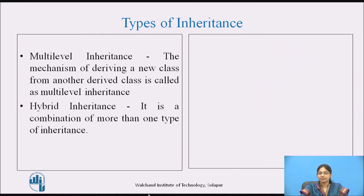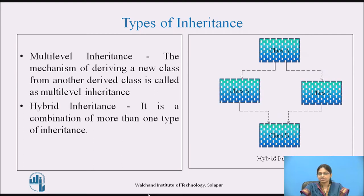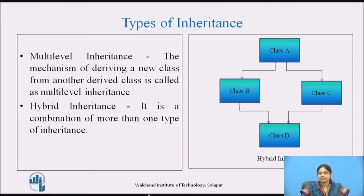The next type is hybrid inheritance. Hybrid inheritance is a combination of more than one type of inheritance. The example shown is a combination of hierarchical and multiple inheritance. However, this combination is not always fixed — we can have different combinations as well.